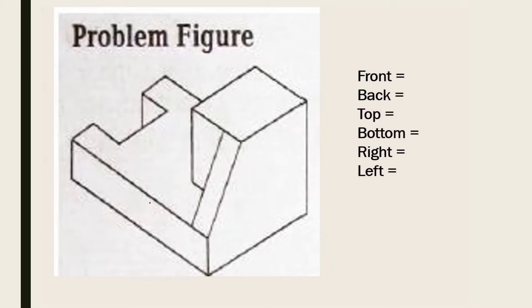The front surfaces are: here it is one, then the slant one — of course it's a front surface — two. Then this one, it faces front, so three. Then this one, it faces front, so four. Total four surfaces at the front.